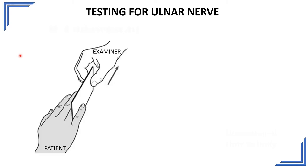The first test is called the card test. A stiff card is placed between two adjacent fingers — between the index and middle finger, middle and ring finger, or ring and little finger. The patient is asked to hold the card tightly between the two adjacent fingers, and the examiner pulls the card, assessing the strength with which the patient is able to hold it. Here we are actually testing the strength of adduction of fingers, which is done by the palmar interossei supplied by the deep branch of the ulnar nerve.